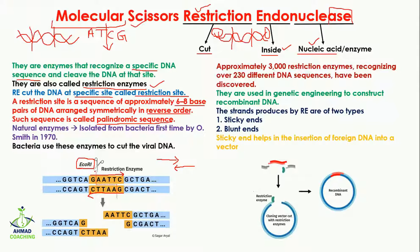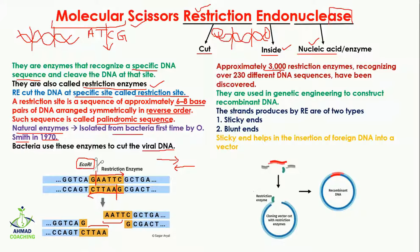EcoRI cuts like a scissor at this specific site, giving you a restricted DNA with the nucleotides cut. Restriction enzymes are natural enzymes — they are naturally found in bacteria and were first isolated in 1970 by O. Smith. Bacteria use these enzymes to cut viral DNA as soon as a virus infects the bacteria and inserts its DNA, the restriction endonucleases attack and cut the viral DNA to prevent infection.